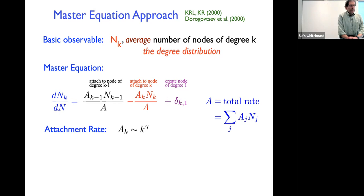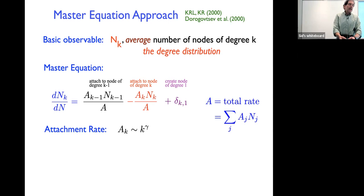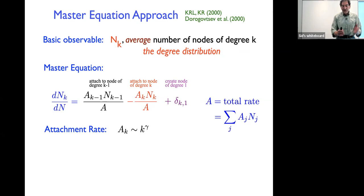To proceed we assume preferential attachment — the rate of attaching to a node of degree k is an increasing function of k, specifically a_k ∝ k^γ. When γ=1 this is the linear preferential attachment model originally solved by Barabási and Albert. We can deal with arbitrary values of γ, and it turns out that linear preferential attachment is actually a very special case.